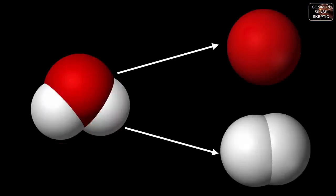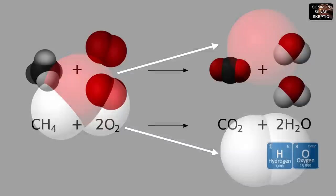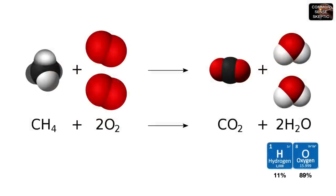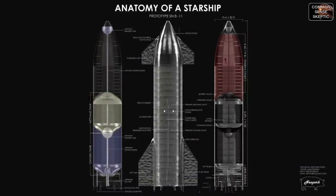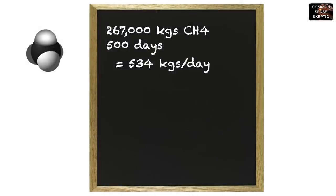Water will actually provide two elements for the propellant synthesis: hydrogen for the methane, and oxygen for the LOX tank. Water is H2O, with oxygen weighing 16 atomic units and hydrogen weighing only one. For every volume of H2O, oxygen accounts for 89 percent of the mass per volume, while it's the hydrogen we need to make methane.